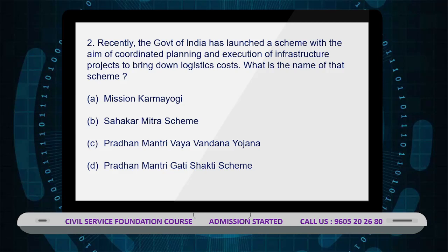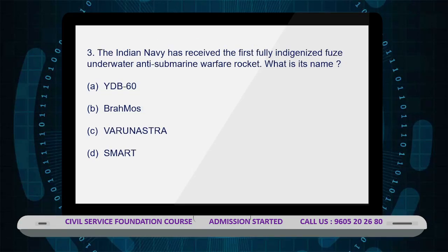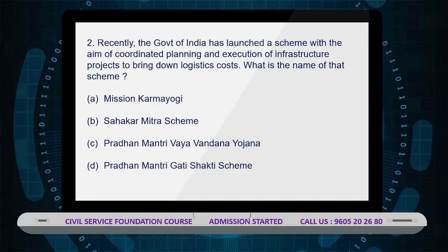Option D — Pradhan Mantri GatiShakti Scheme — is the correct answer. PM GatiShakti is a digital platform that will bring 16 ministries, including Railways and Roadways, together for integrated planning and coordinated implementation of infrastructure connecting projects.